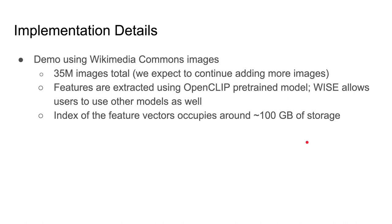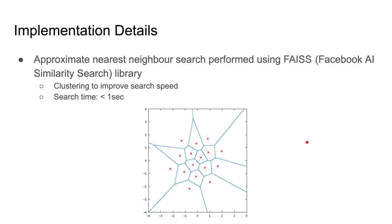In terms of implementation, for the demo we showed earlier with the Wikimedia Commons images, we have indexed around 35 million images in total. As this is an ongoing project, we expect to continue adding more images over time. The features were extracted using the OpenCLIP pre-trained model, though WISE allows users to use other models in their own projects. The index of the feature vectors occupies around 100 gigabytes of storage. We use approximate nearest neighbor search using the Facebook AI Similarity Search (FAISS) library, which uses techniques like clustering to improve search speed. As a result, we are able to achieve search times within one second on the server side.